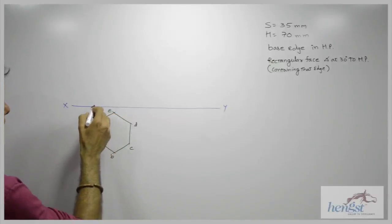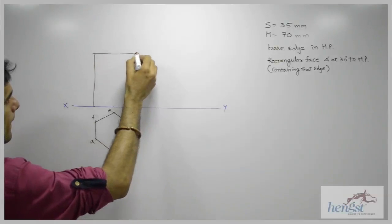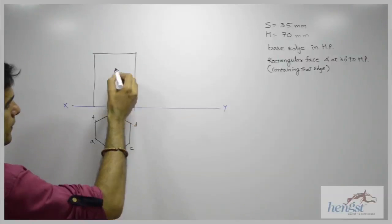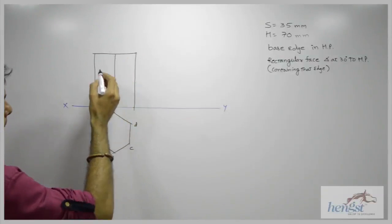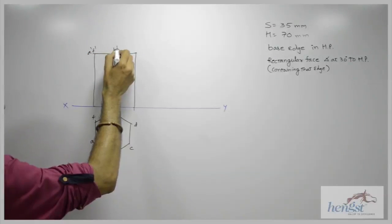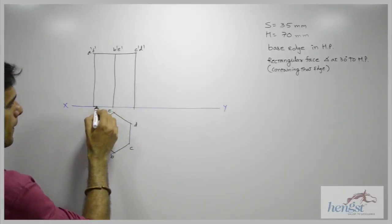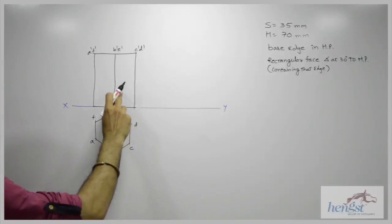And in front view, I will get a rectangle. This is a dash, f dash, b dash, e dash, c dash, d dash. So this is top view and this is front view.